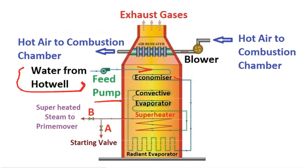Feed water from the feed pump — which is connected to the hot well, the outlet of the condenser — passes through the economizer and then through the radiant evaporator. In the radiant evaporator, as shown in the figure, the majority of the water is converted into steam. The remaining water is evaporated in the final evaporator by absorbing heat from hot gases by convection.